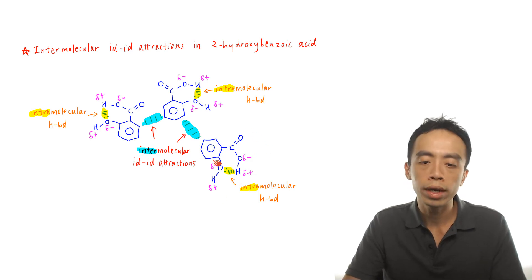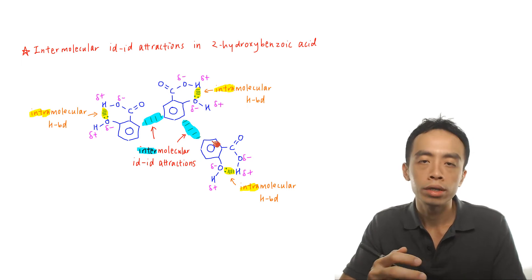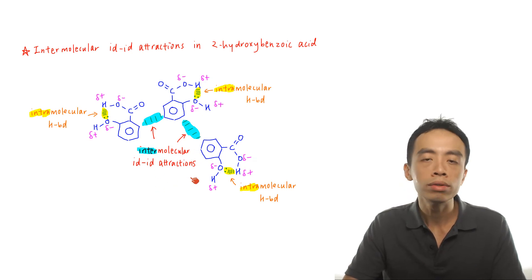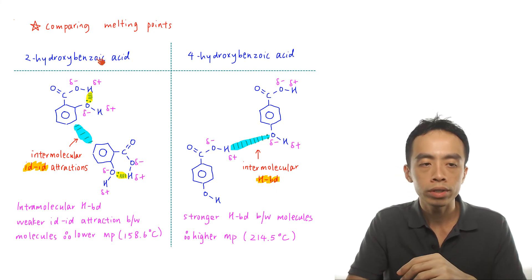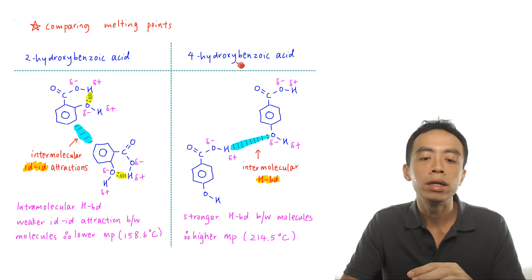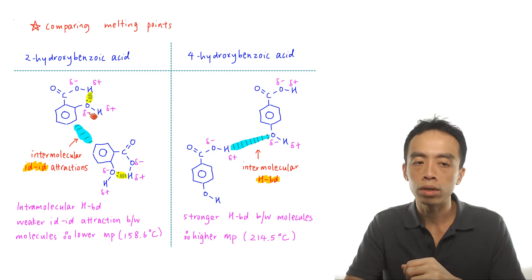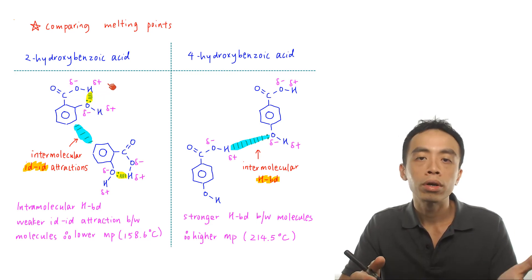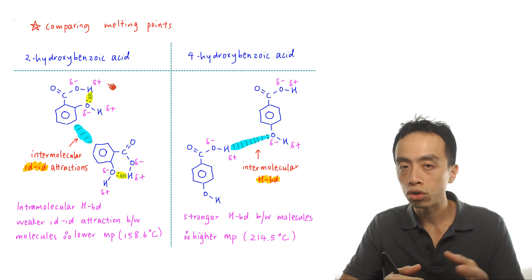Similarly, because 2-hydroxybenzoic acid forms intramolecular hydrogen bonds, those hydrogen bonds are used up and not available for intermolecular interaction between molecules. So it has to use some other interaction between molecules — again, intermolecular instantaneous dipole-induced dipole attraction. Because 2-hydroxybenzoic acid can form intramolecular hydrogen bonds, the consequence is that it has to use weaker IDID attraction between molecules, and because the intermolecular forces are weaker, it tends to have a lower melting point: 158.6°C.